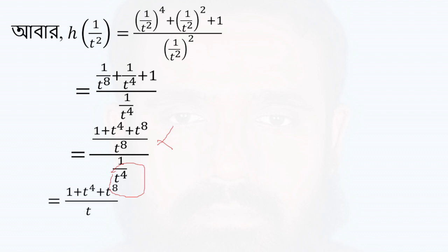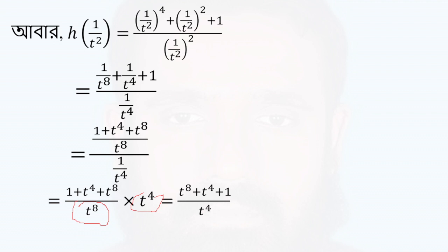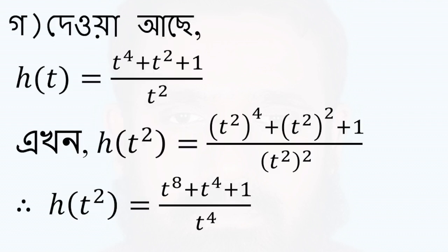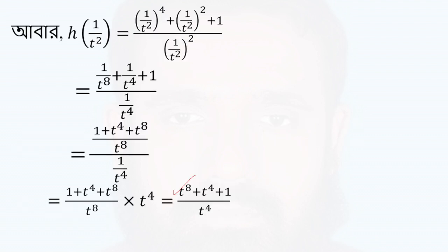We see that 3 to the power 4, and 3 to the power 8. So s(t²) equals t to the power 8, plus t to the power 4, plus 1, by t to the power 4. This confirms that s(t²) = s(1/t²), since both expressions are equal to (t⁸ + t⁴ + 1)/t⁴.